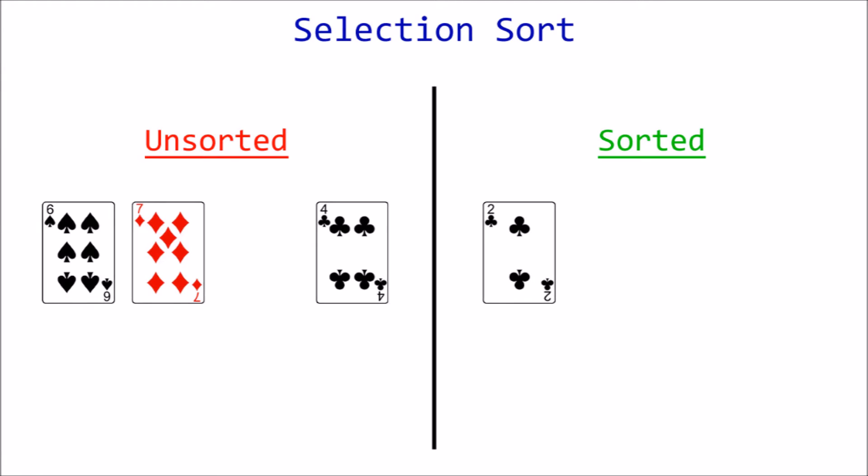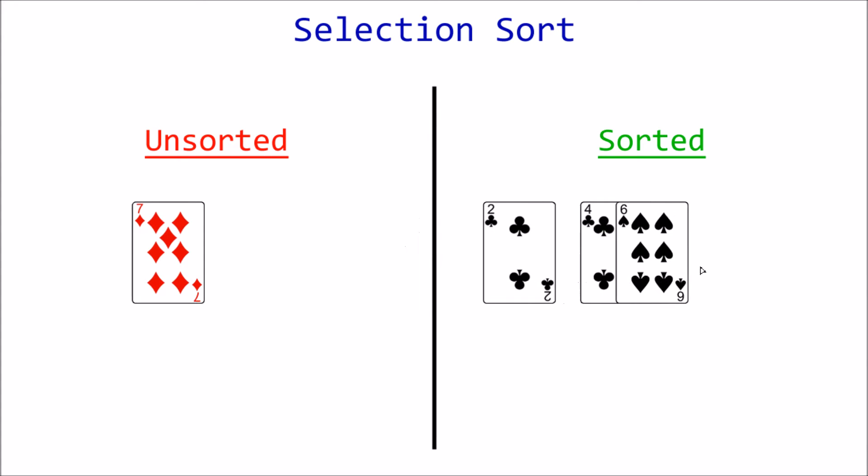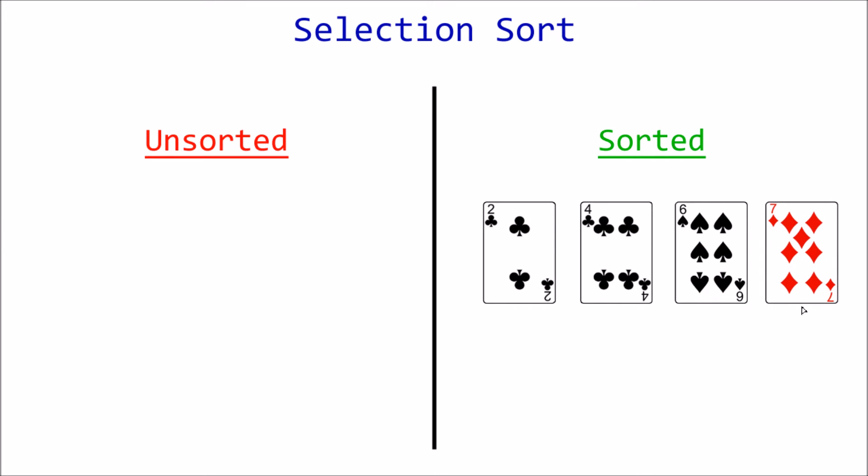We start by moving the two of clubs to the sorted section because it's the smallest. Now we look for the next smallest in the unsorted section, which is the four of clubs. So we move that, then six, and finally seven. We now have a sorted list.